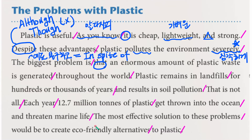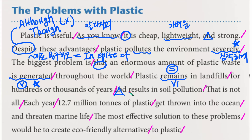'Severely'는 심각하게라는 부사로 동사를 꾸며주고 있기 때문에 이 자리에는 부사 형태만 가능하며 'severe'라고 쓰면 안 됩니다. 'Is generated'는 수동태로, 쓰레기가 스스로 발생하는 게 아니니까 발생되어집니다라고 해석합니다. 'Remains'와 'results in' 두 동사가 플라스틱을 주어로 사용되며 3인칭 단수이므로 둘 다 s를 붙였습니다. 'For hundreds or thousands of years'는 그냥 오랜 세월 동안이라고 바로 해석해서 넘어가세요.